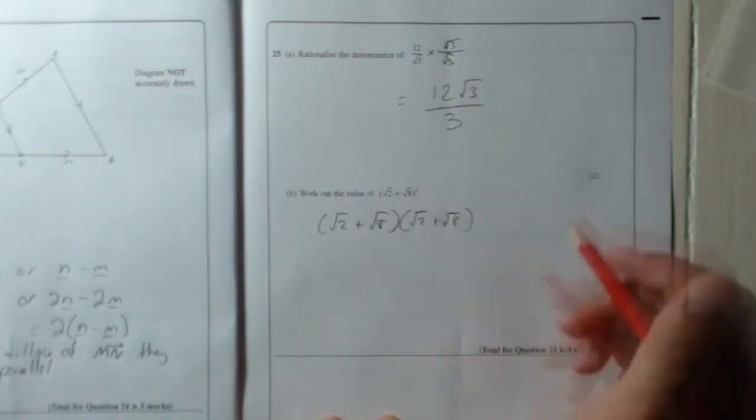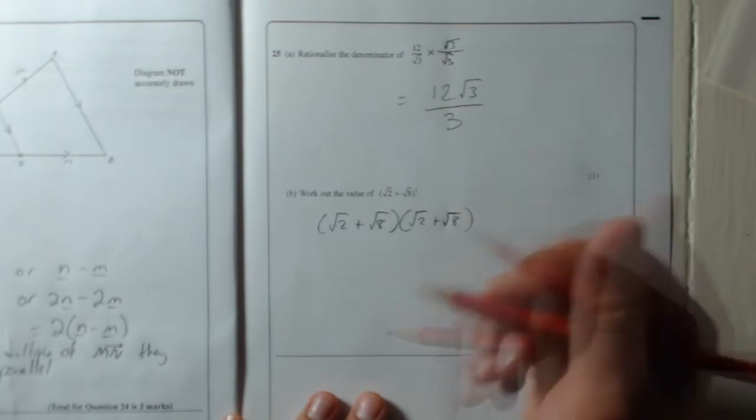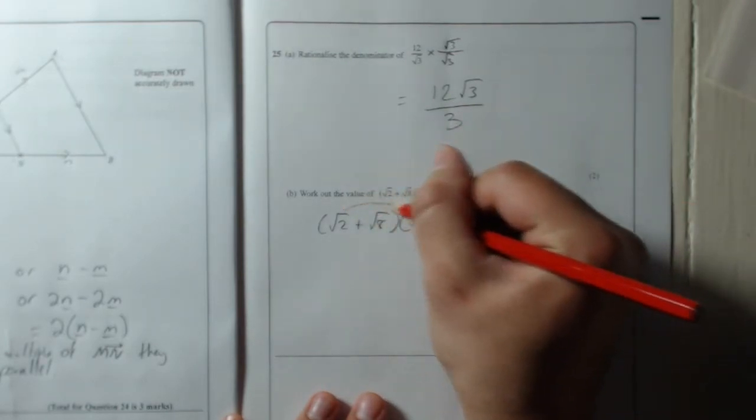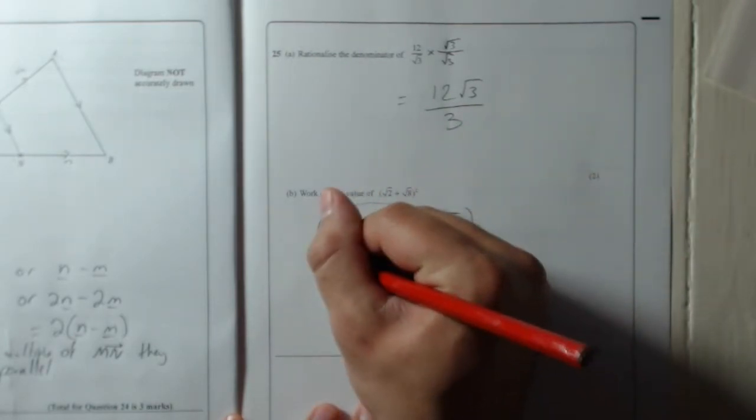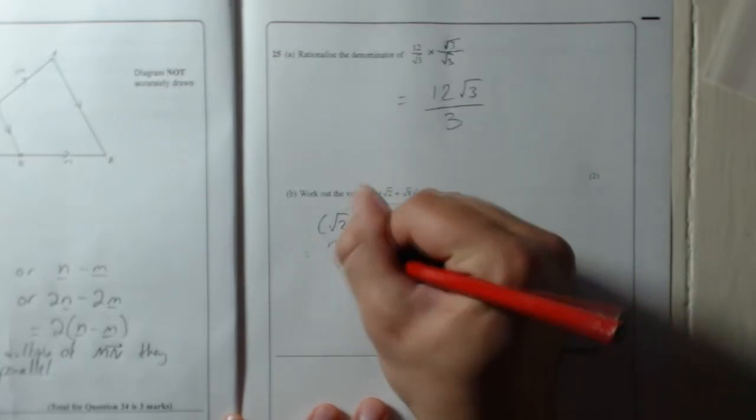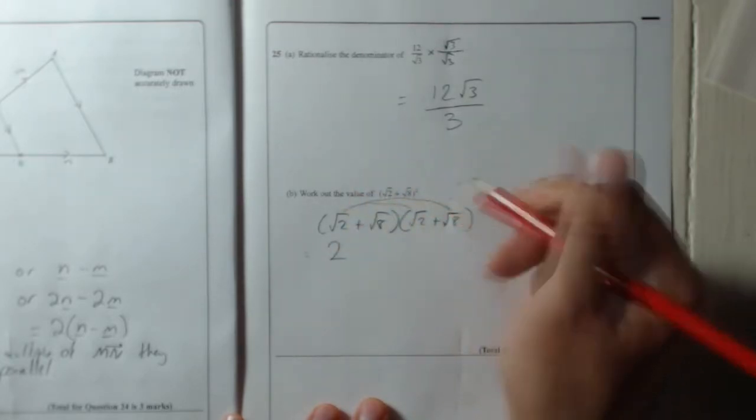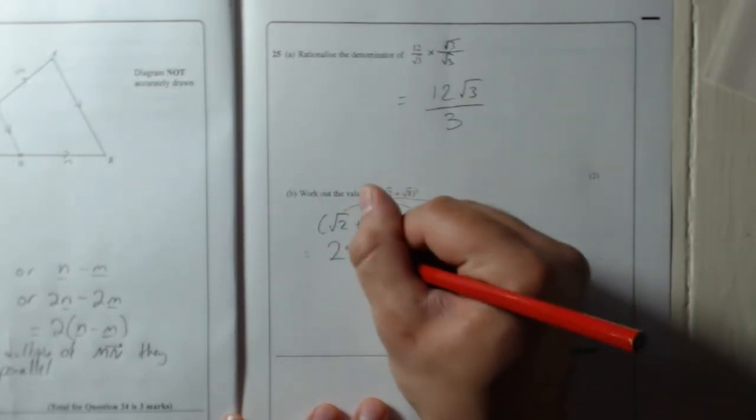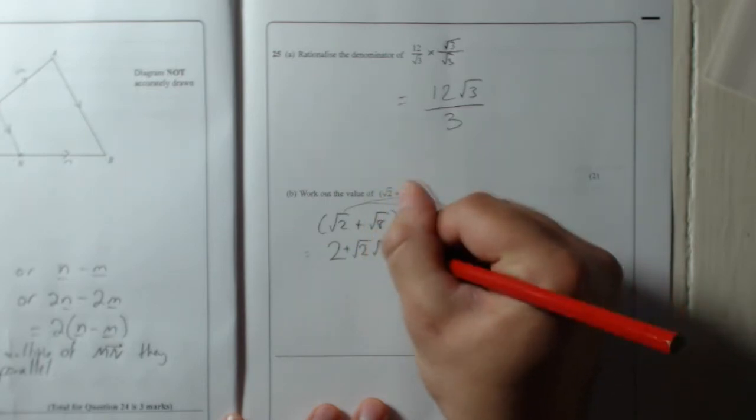And now I'm going to multiply it out. I'm going to expand it just like I would a set of brackets with like x's in. So root 2 times root 2 is just 2, and then plus root 2 times root 8.